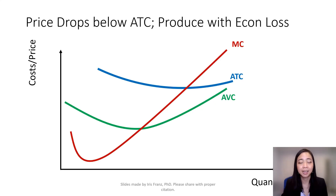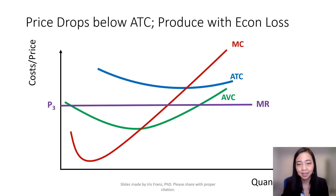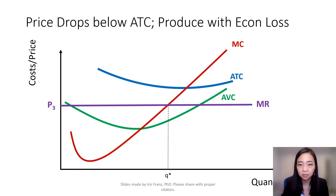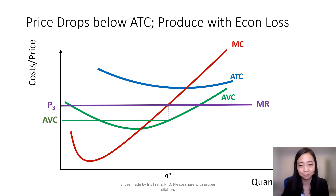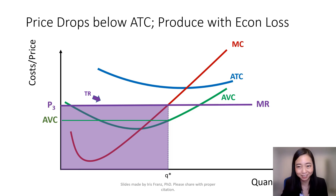Here I will show you a diagram when my firm will continue to produce with an economic loss. Suppose the price goes down to P3 — my optimal quantity will be at the intersection of marginal revenue and marginal cost, so my quantity will be Q star. Given quantity Q star, I can find my average variable cost, marked on the green line. My total revenue will be the purple shaded area — specifically P3 times quantity Q star.